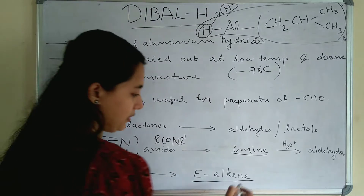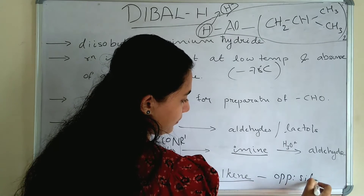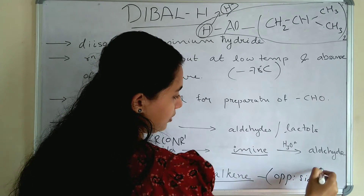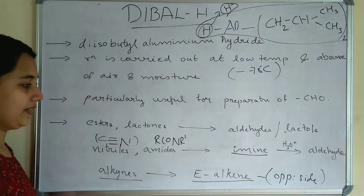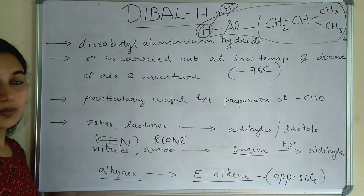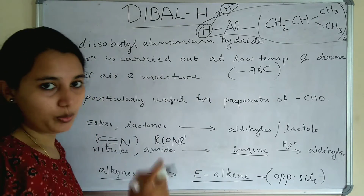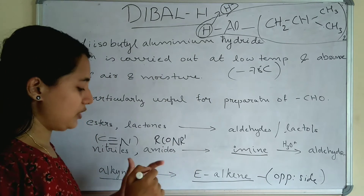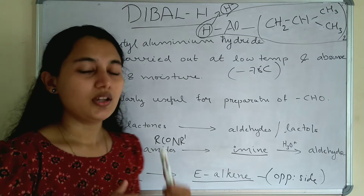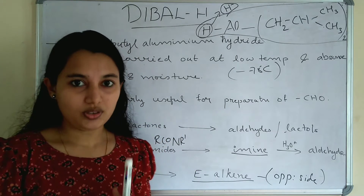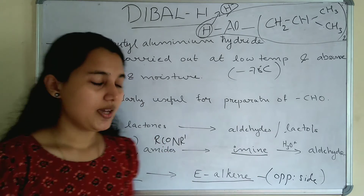E means opposite side — the larger groups will be on the opposite side, giving E geometry. So these are the important points regarding DIBAL-H. DIBAL-H is di-isobutylaluminium hydride. The reaction takes place at low temperature and in the absence of air and moisture, and it is particularly useful for preparation of aldehydes.